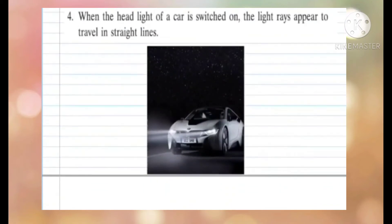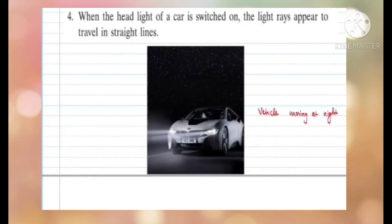If you have observed a vehicle moving at night, you have seen that they use headlights to illuminate the road ahead. If you observe the light coming out of the headlights of the vehicle, you will observe that the rays are coming out in a straight line.